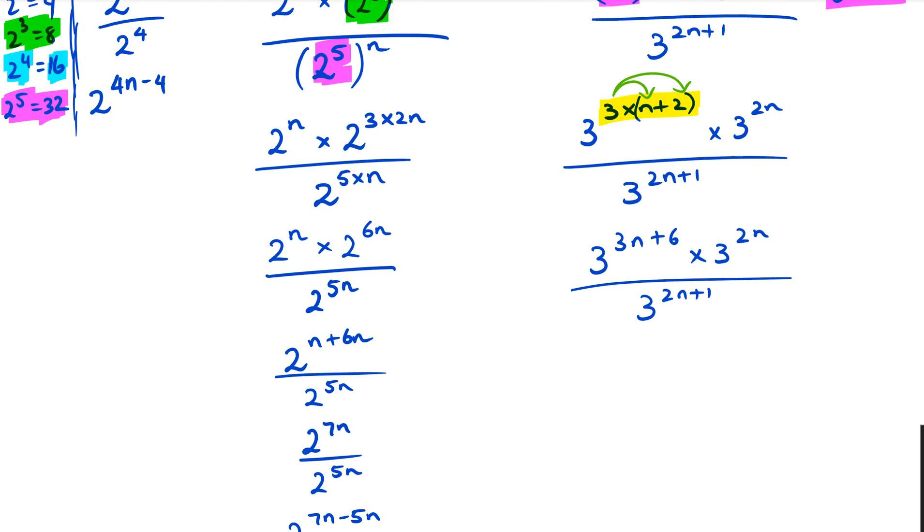Now we keep going. So we've got to add the powers together because the bases are the same now. So we can actually replace that with 3n plus 6 plus 2n, and the whole thing is divided by 3, 2n plus 1. So simplifying the numerator, we're going to get 3, 5n plus 6, over 3, 2n plus 1.